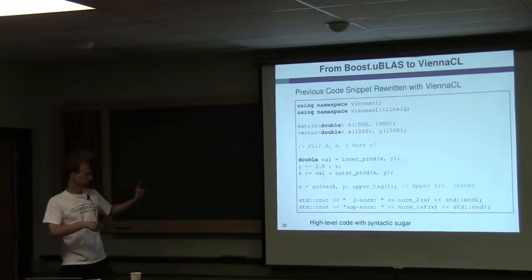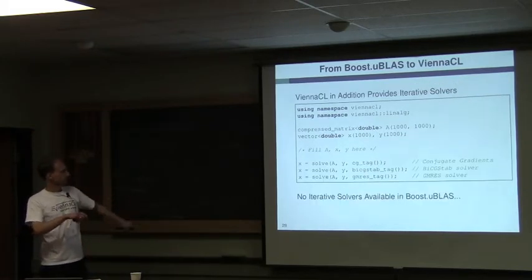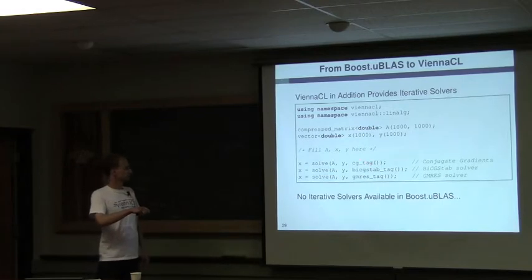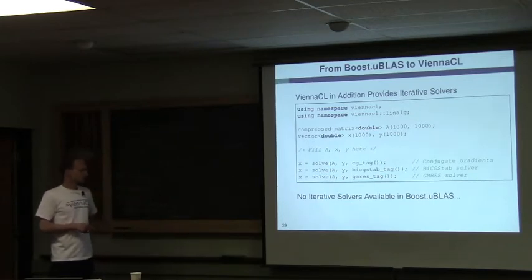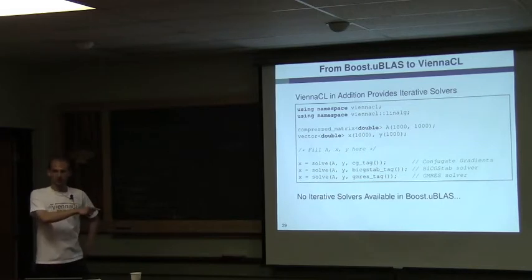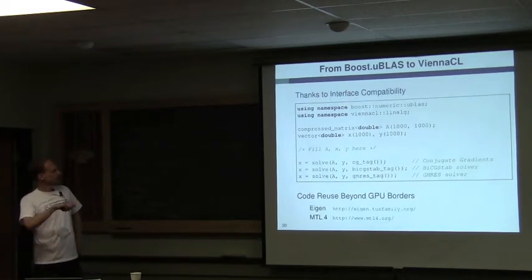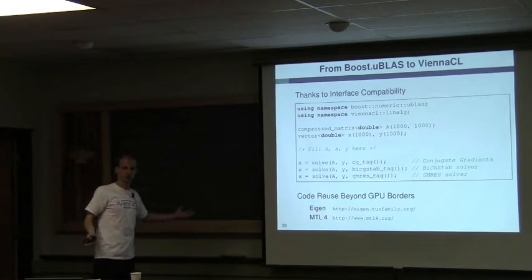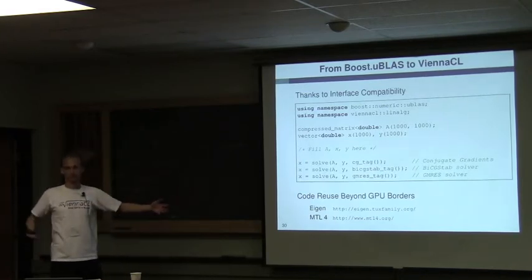There are also things in ViennaCL not in Boost uBLAS — for example iterative solvers. Boost uBLAS offers just triangular solvers, selected by an upper tag. ViennaCL extends this tag dispatching to add conjugate gradients, BiCGSTAB, GMRES, and preconditioners. Since the interfaces are compatible, you can mix the two: take a compressed matrix and vector from uBLAS and use ViennaCL's iterative solver implementation — suddenly code written initially for GPUs interoperates with uBLAS CPU execution.